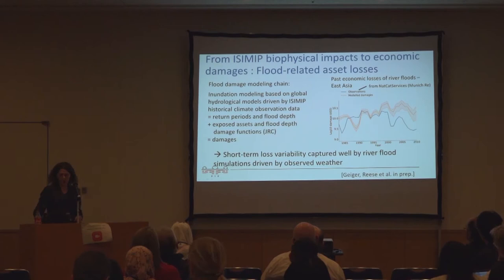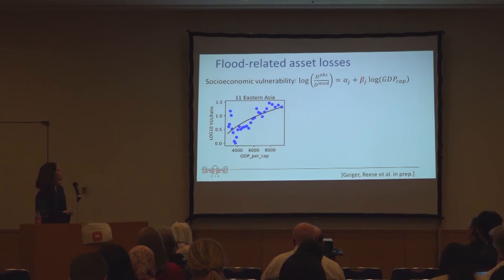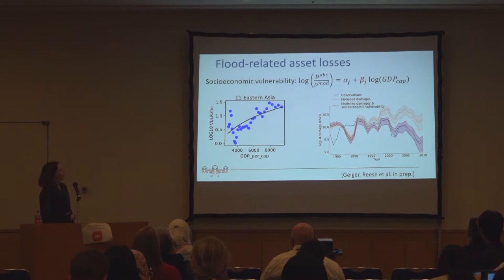We look at the period from 1980 to 2010: the blue line is observations from the NatCat Services database from Munich Re, and the orange line is what we get with this process-based simulation. We can get the variability fairly well, but there is an offset in the trend. We believe this is due to the fact that we don't appropriately capture changing vulnerability — people enhance their flood protection and flood defenses over time, and while there is some flood protection in the inundation modeling, it is constant.